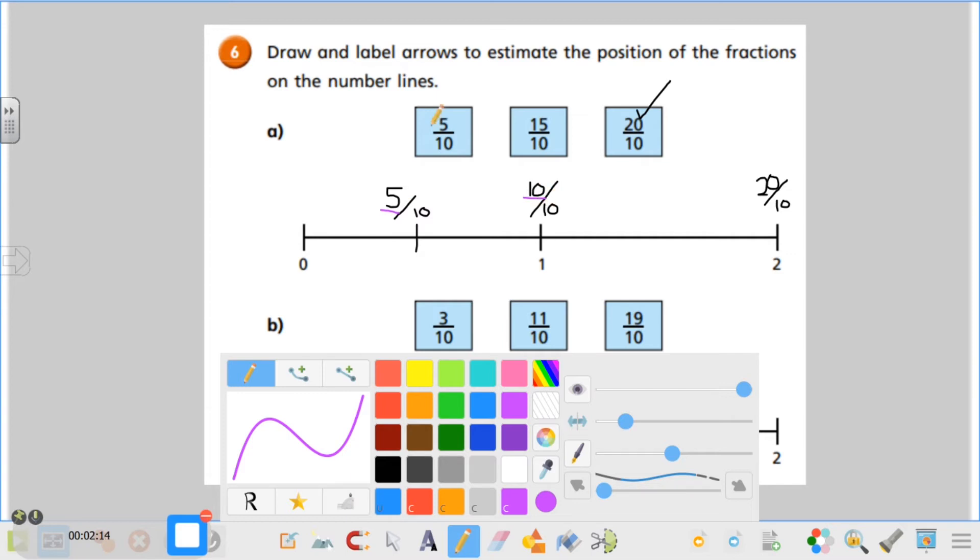Now we need to plot 15, so that's going to go in between our 10 and our 20 because we know our 5 times tables: 5, 10, 15, 20. So 15 tenths has to go somewhere around here. That is going to be my 15 tenths.